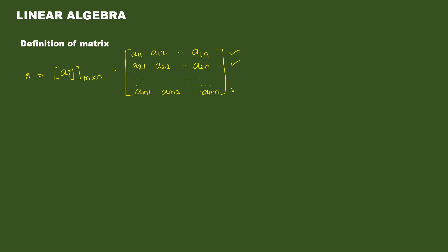Horizontal lines vandhutu rows, vertical lines vandhutu columns. Aij is the element in the i'th row and j'th column of matrix A. For example, element A22 means second row, second column element.